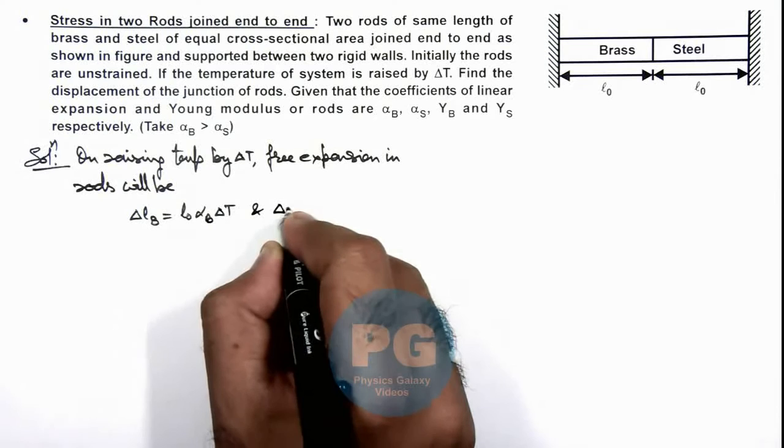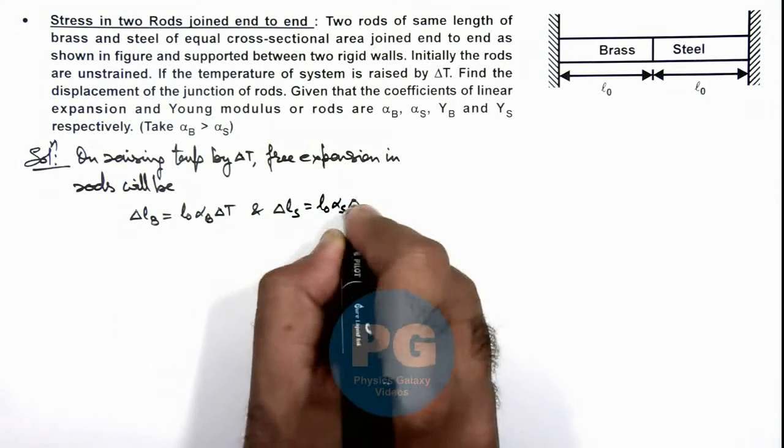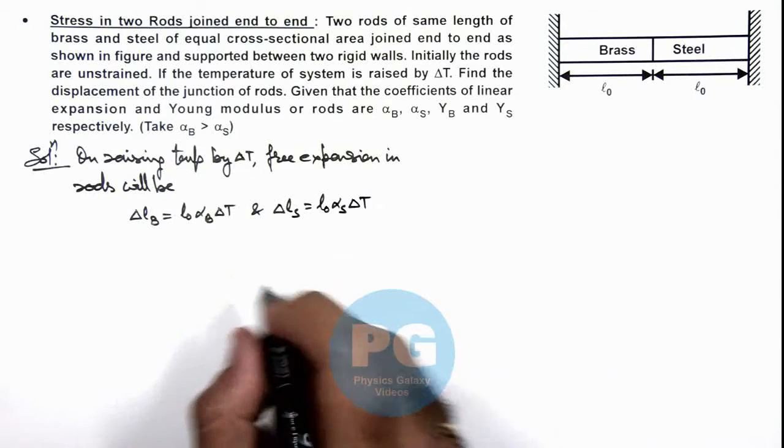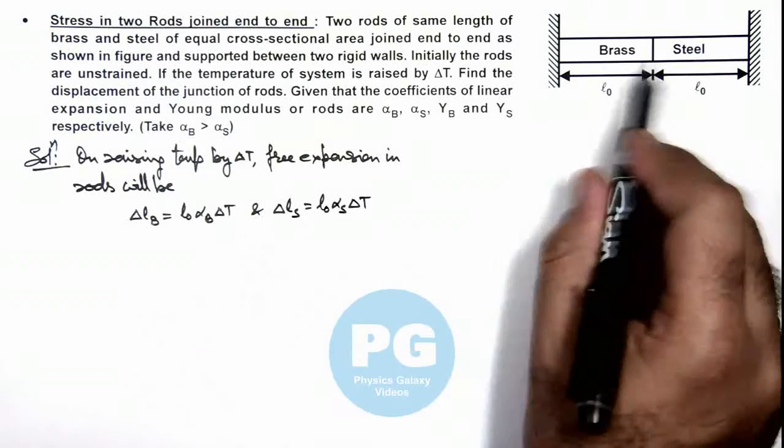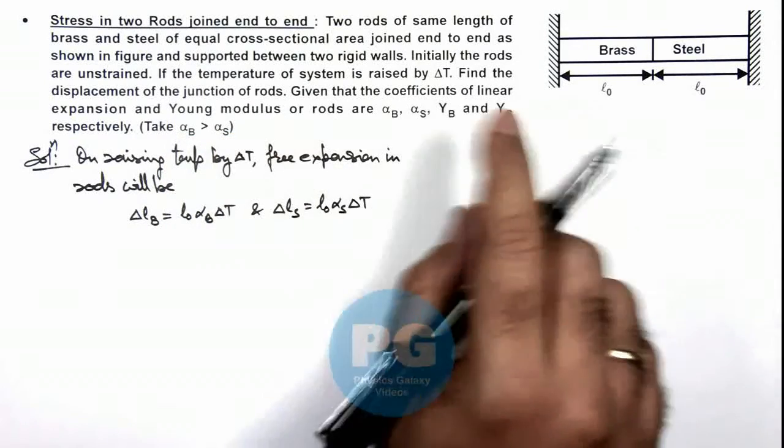And ΔL in steel will be L₀·αS·ΔT. Here, if the rods are independent both will expand in this way, and as αB is greater than αS, brass will expand more.